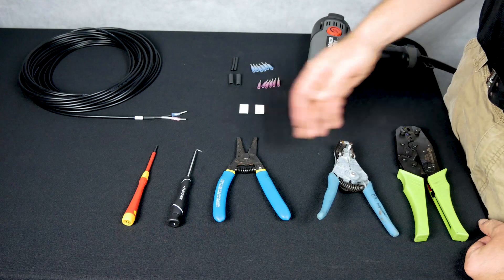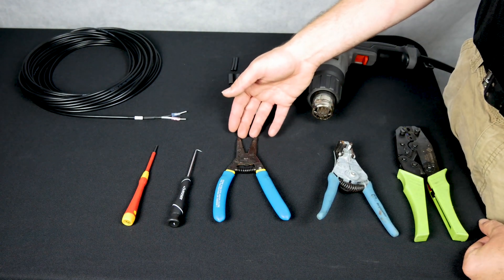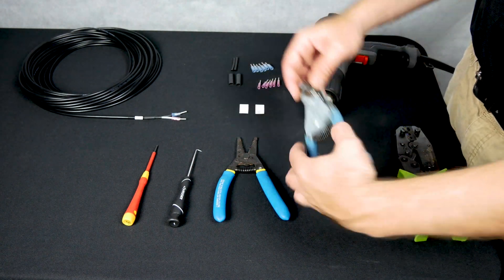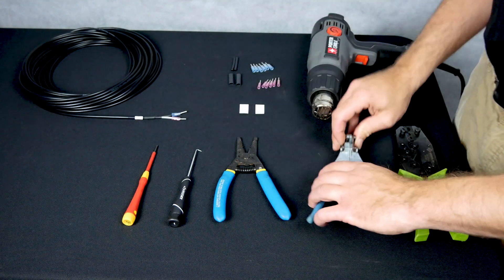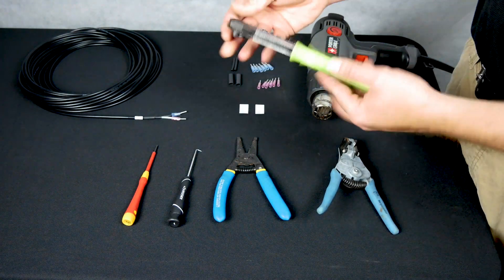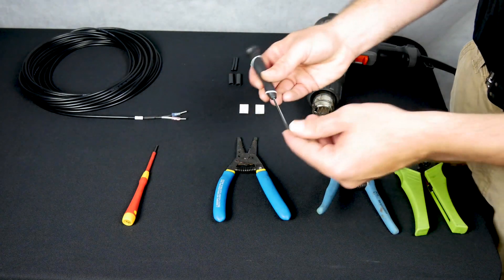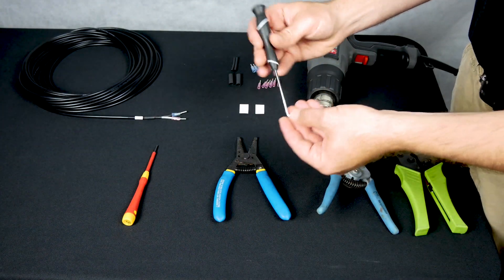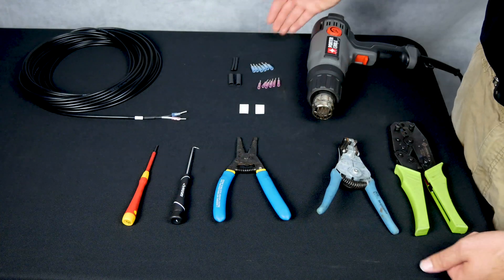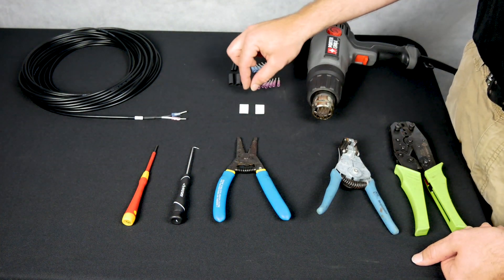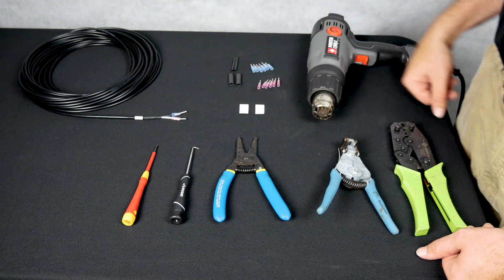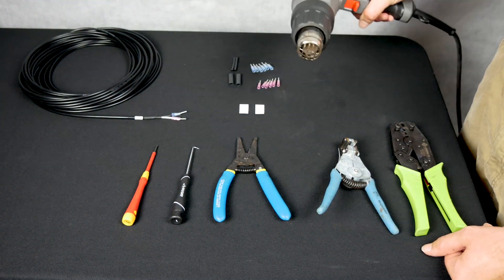To do this you will need a wire stripper, a coax cable stripper, a crimper for the terminals you'll be using, a dental pick to separate the braid on the coax, your terminals and heat shrink tubing, and labels. Also you will need a heat gun to shrink the tubing down.